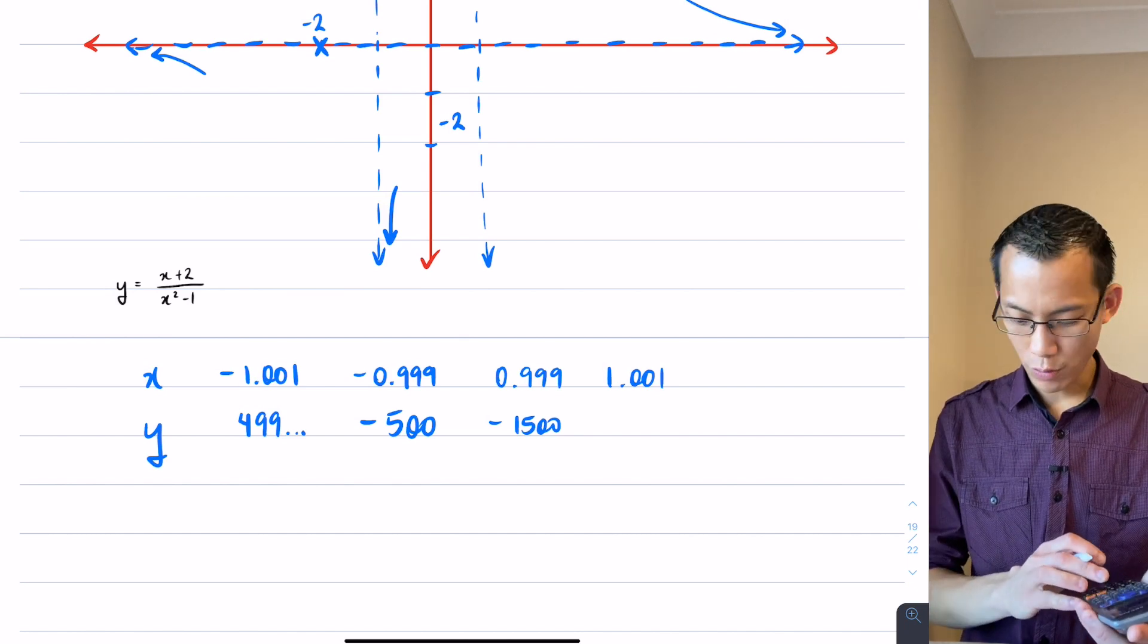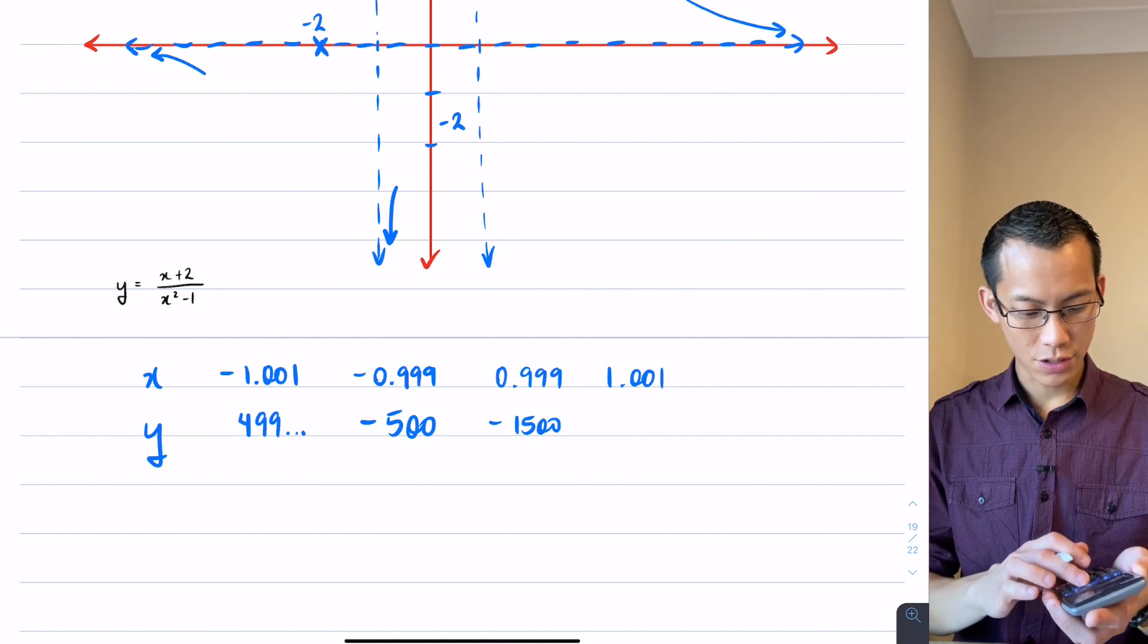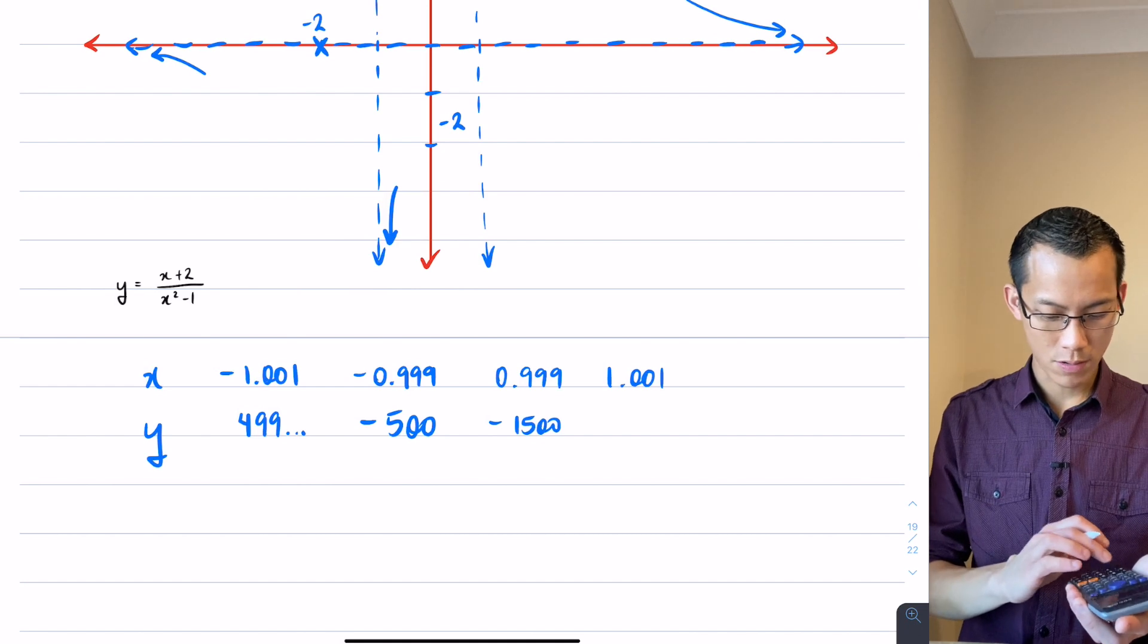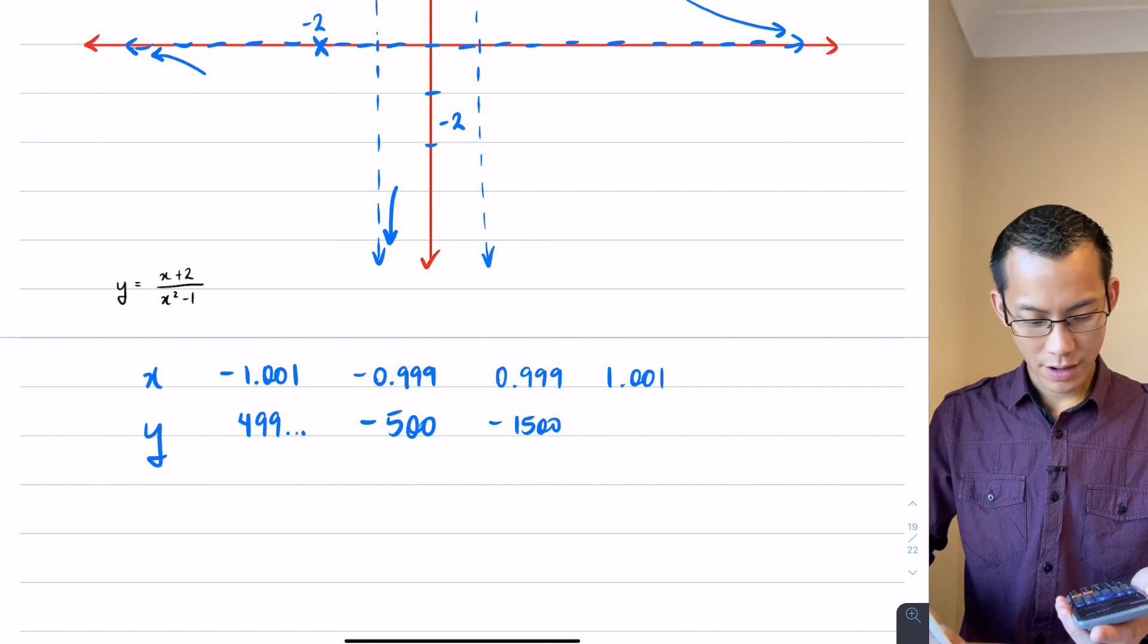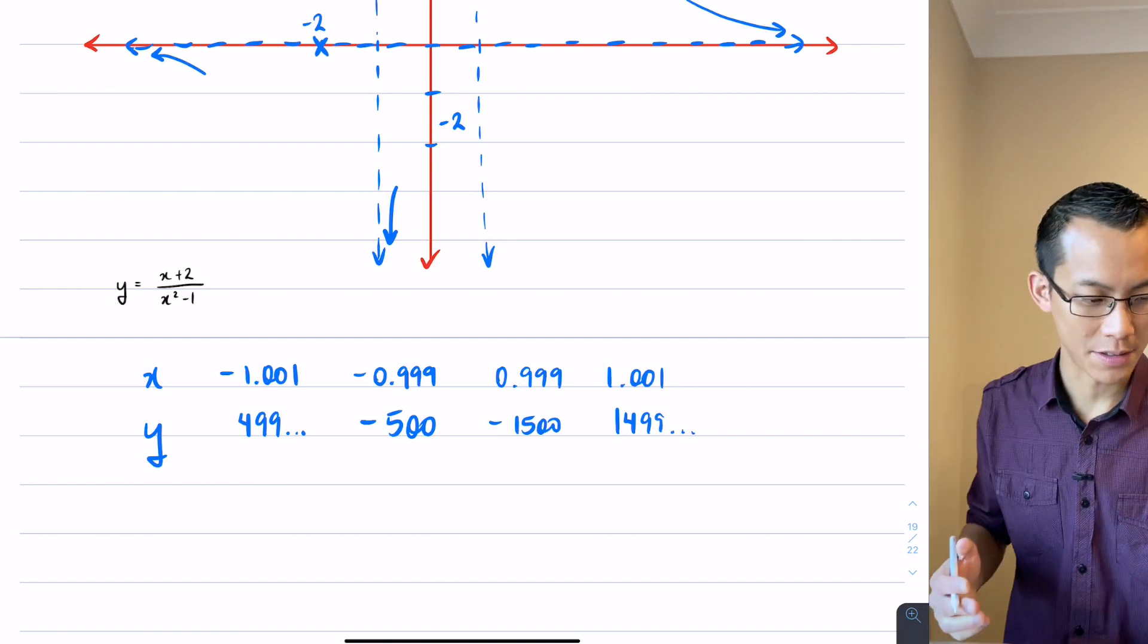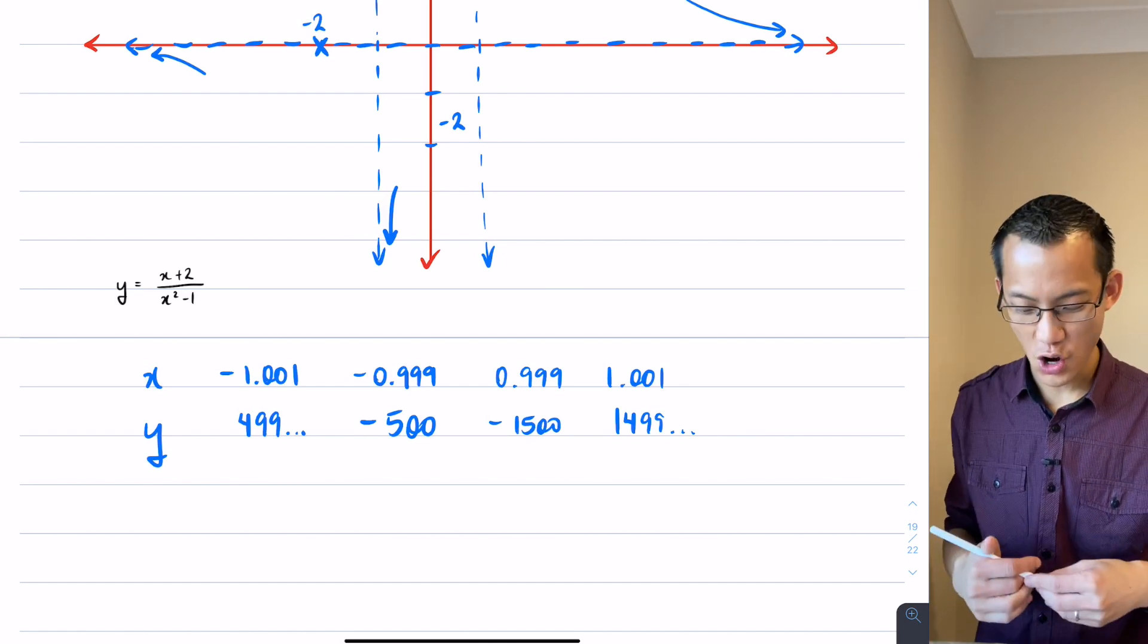And then when I go just to the right with 1.001, when I go ahead and evaluate that, you're going to get, I wonder if you can predict what comes next, 1.001, I'm getting 1499 and some more decimals. I actually do think it rounds up. Okay, but the actual value is not what matters, it's where the thing is going.